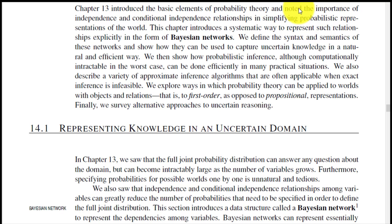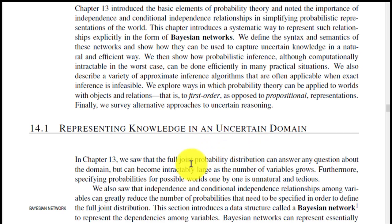Good morning. We are going to start the last chapter, that is probabilistic reasoning. Here we are going to apply probability — probability can be either 0 or 1 — in different situations. The first point is representing knowledge in uncertain domains. We have seen quantifying uncertainty in the last chapter, and here we are going to talk about how to represent knowledge in the case of an uncertain domain.